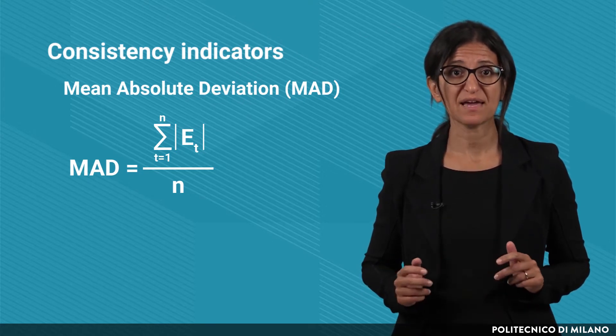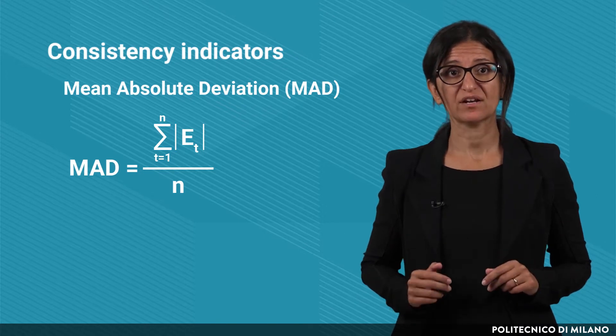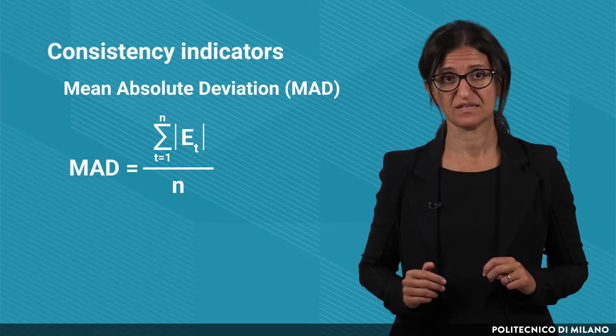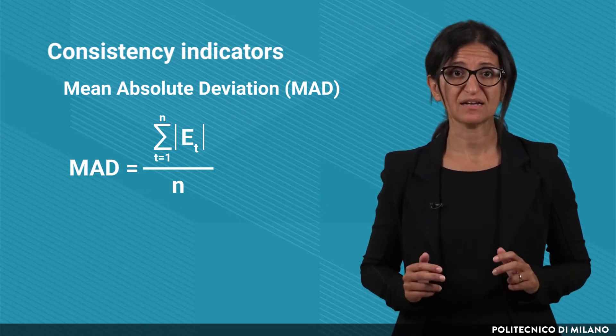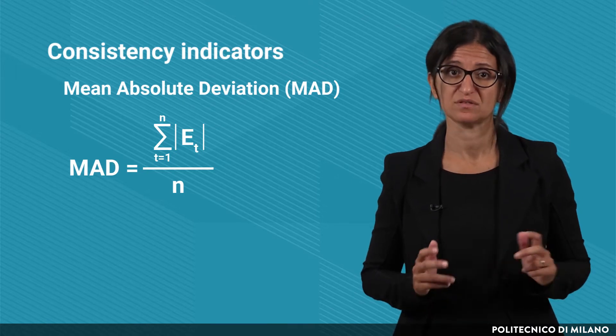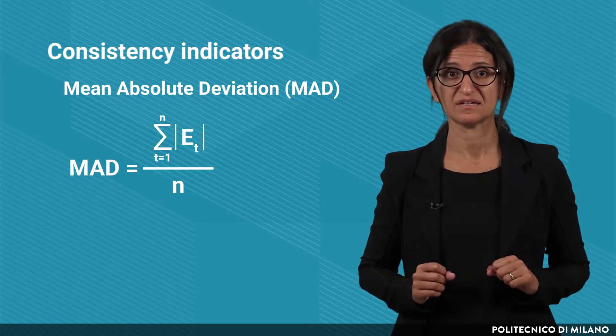However, if the MAD is high, we cannot understand if we are underestimating or overestimating the demand, so once again we see that it is important to combine the evidences got from distortion and consistency indicators.